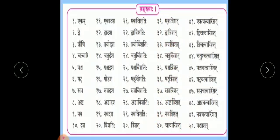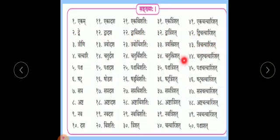40 means chatvarimsat. From 1 to 9 the ending is chatvarimsat. What you have to remember: ekachatvarimsat, dvichatvarimsat - note that dve becomes dvi here. Then tryachatvarimsat, chatushchatvarimsat, panchachatvarimsat, shatcatvarimsat, saptachatvarimsat, ashtachatvarimsat, navarchatvarimsat, and panchasat.